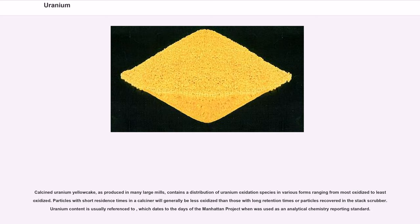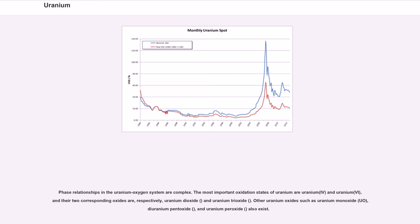Calcined uranium yellowcake, as produced in many large mills, contains a distribution of uranium oxidation species in various forms ranging from most oxidized to least oxidized. Uranium content is usually referenced to U3O8, which dates to the days of the Manhattan Project when U3O8 was used as an analytical chemistry reporting standard. Phase relationships in the uranium-oxygen system are complex. The most important oxidation states of uranium are uranium(IV) and uranium(VI), and their two corresponding oxides are, respectively, uranium dioxide (UO2) and uranium trioxide (UO3). Other uranium oxides such as uranium monoxide (UO), diuranium pentoxide (U2O5), and uranium peroxide (UO4) also exist.